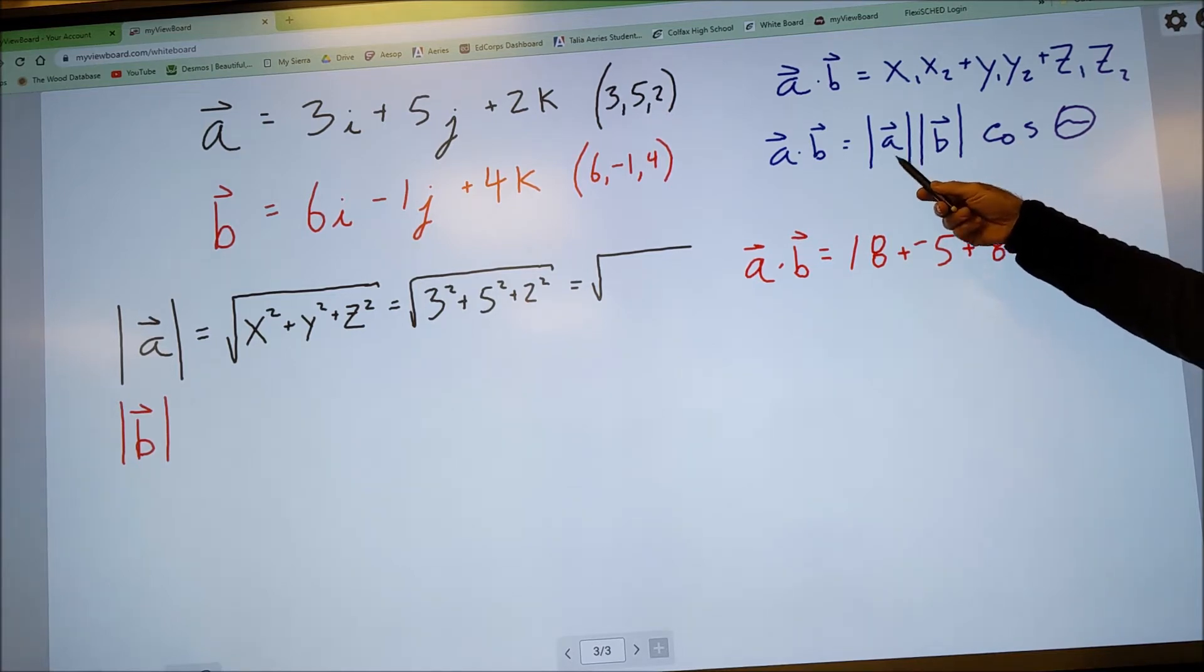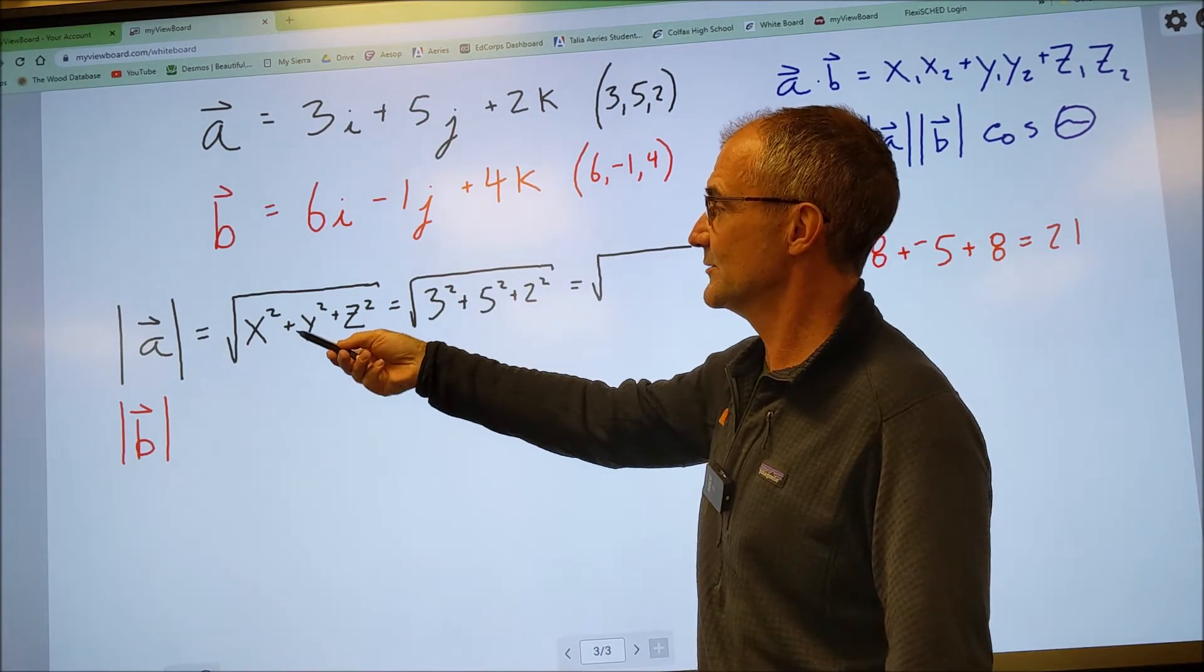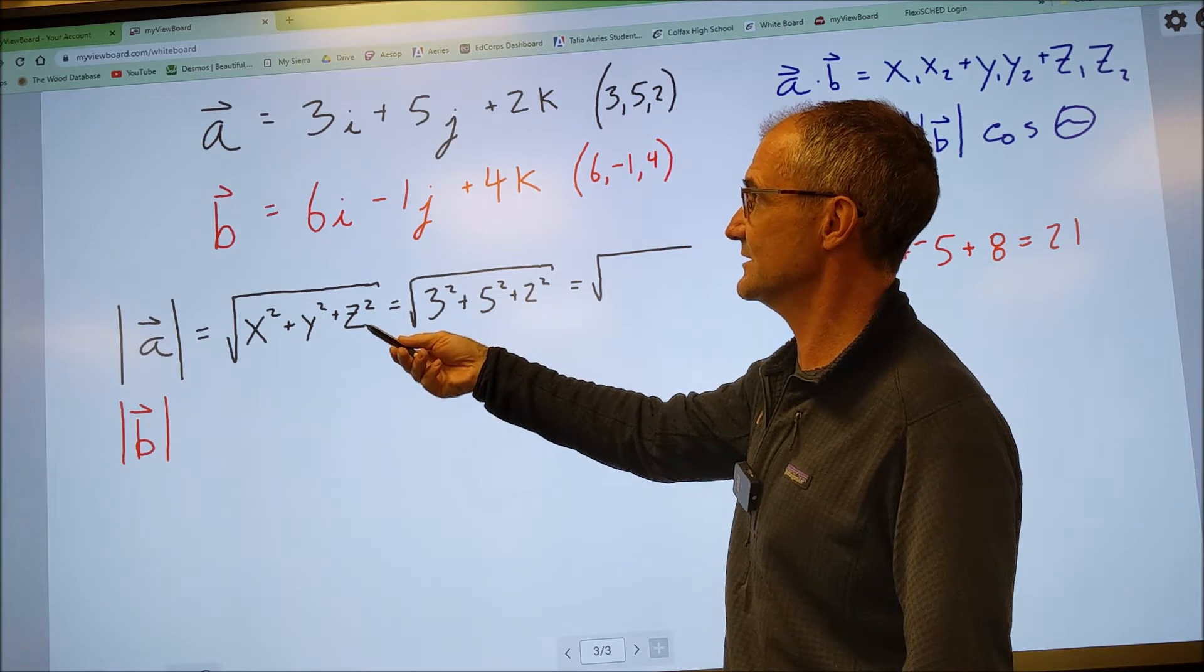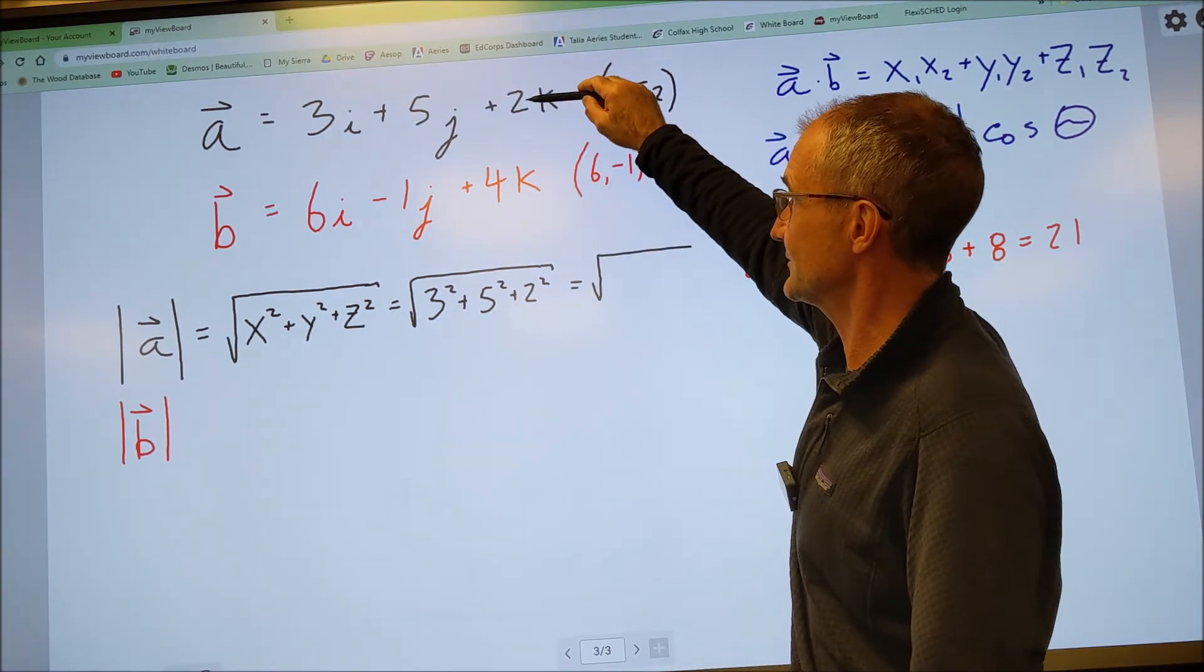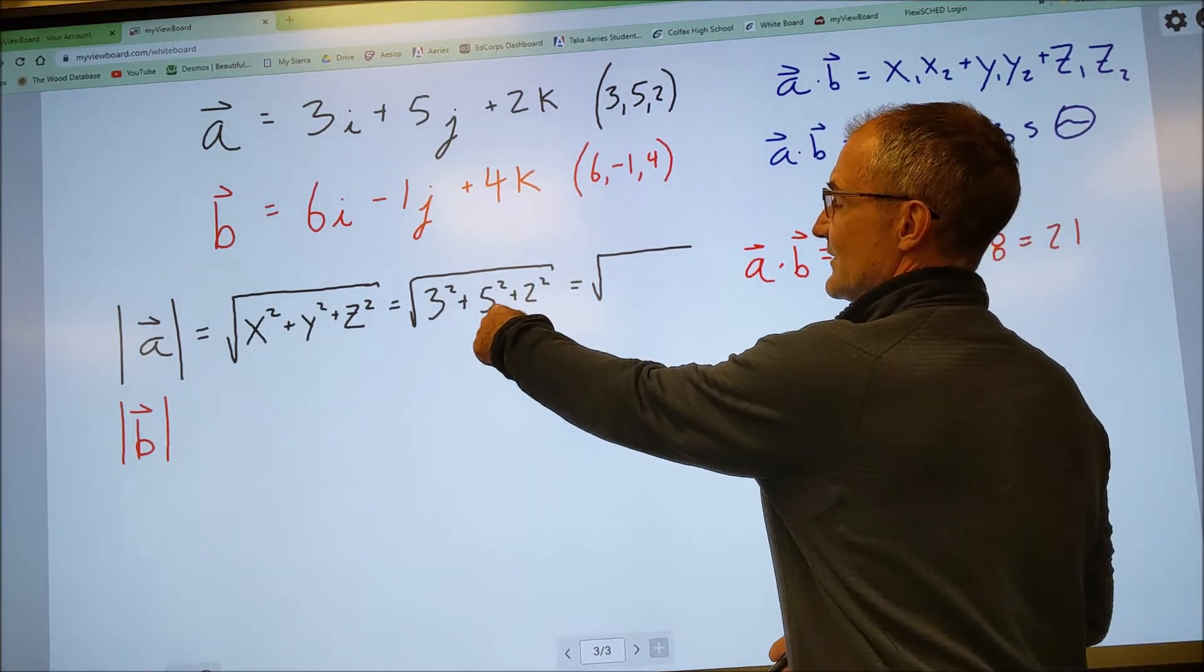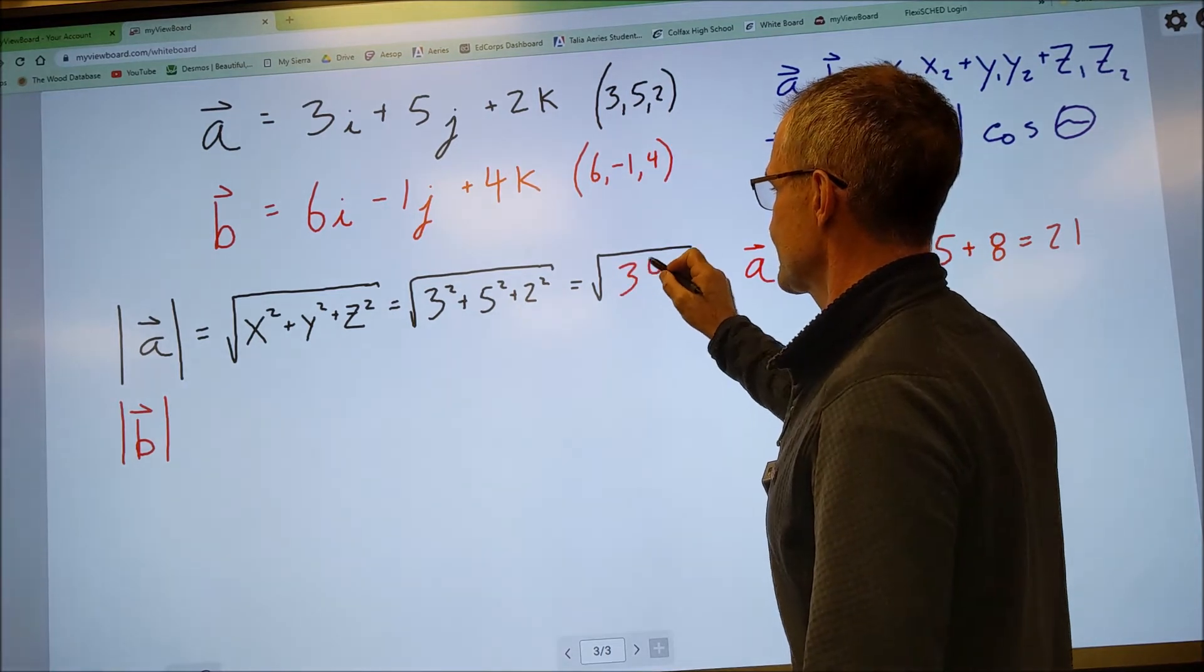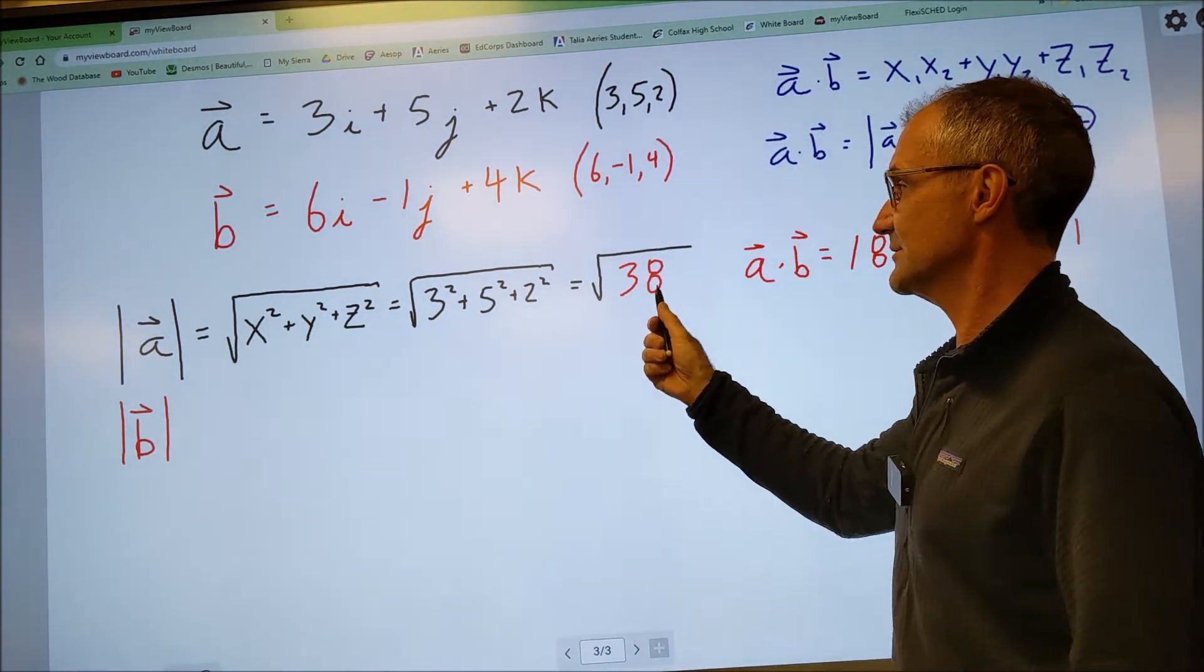So let me go ahead and find the magnitude of A. Magnitude of A is the X coefficient squared, plus the Y coefficient squared, plus the Z coefficient squared. So in this example, 3 squared plus 5 squared plus 2 squared, or 9 plus 25 plus 4, 38. So the magnitude of A is equal to the square root of 38.